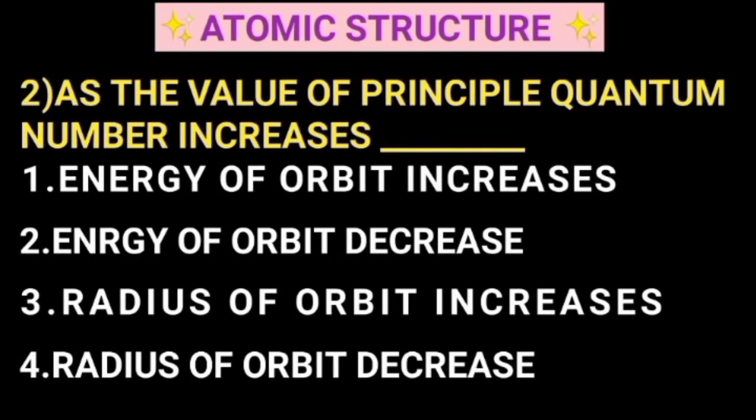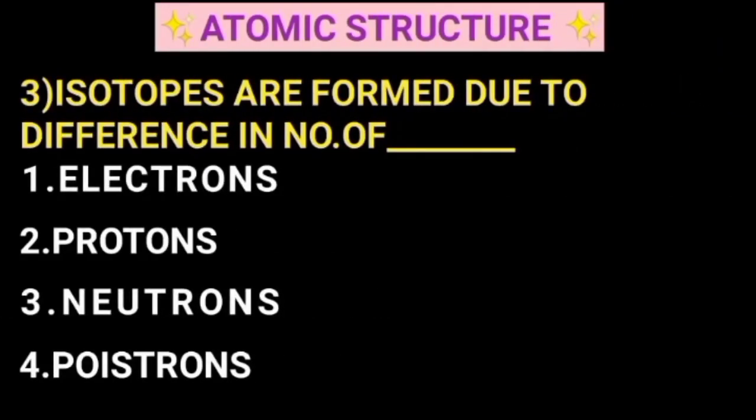As the value of principal quantum number increases, which of the following will increase? Isotopes are formed due to difference in number of electrons, protons, neutrons and positrons. If you want to check out the important topics, you will try to show you the following. If you want to check out the notes, you will try to check out the message.